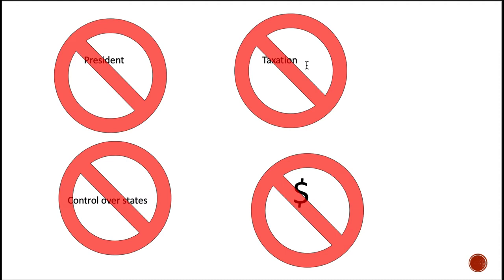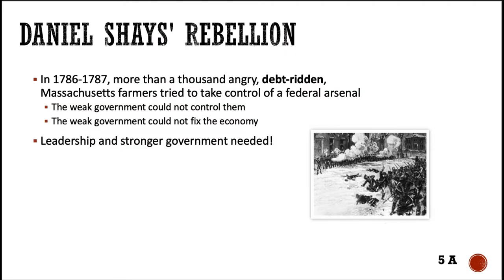You can imagine that will cause some problems. Speaking of problems — Shays' Rebellion. In 1786, more than a thousand angry, debt-ridden Massachusetts farmers tried to take control of a federal arsenal, meaning a place where guns and weapons are held — something that belonged to the new government itself. The weak central government didn't have the power or control to stop them. There was no federal army or militia; each state had its own militia. Coordinating a way to stop these angry farmers was difficult. Also, the weak government didn't even have the power to really enforce these debts, so the weaknesses of the Articles are exposed.